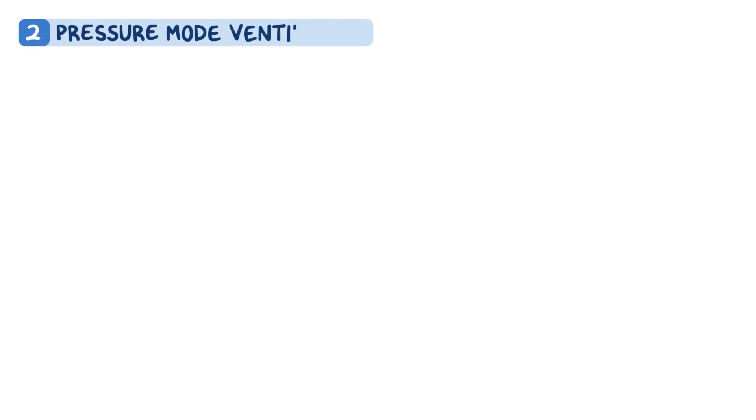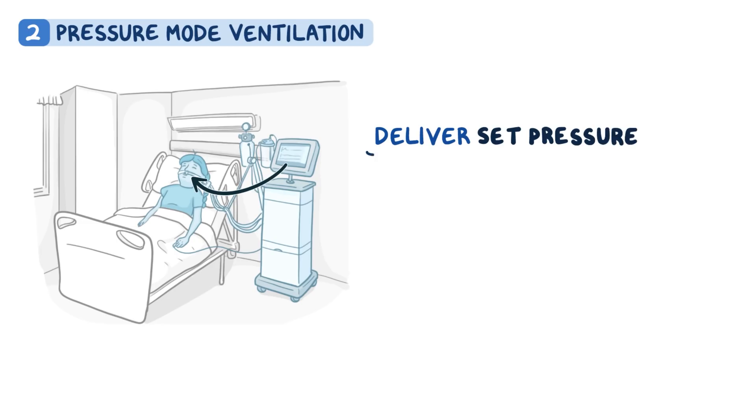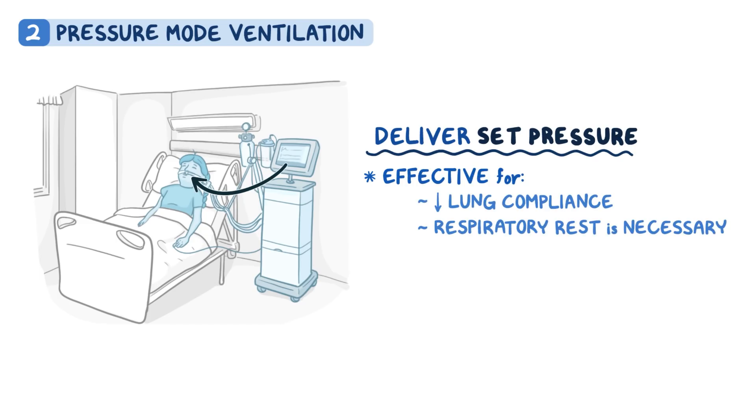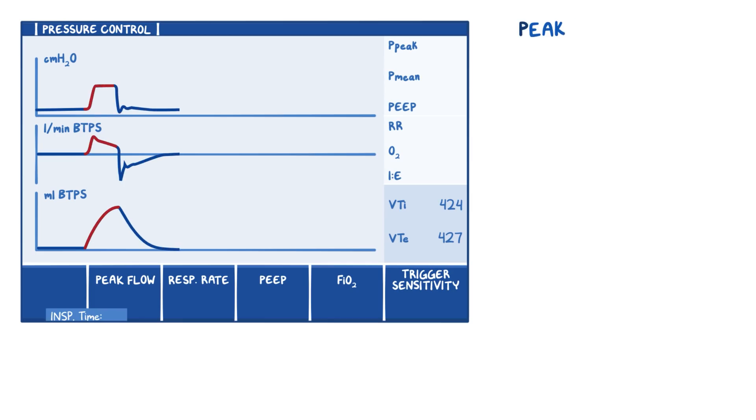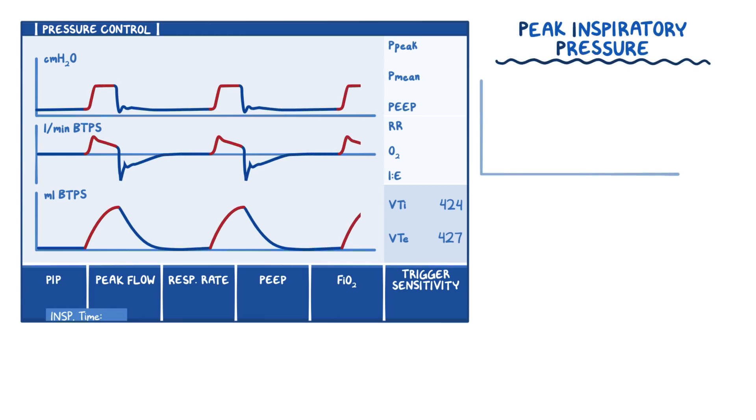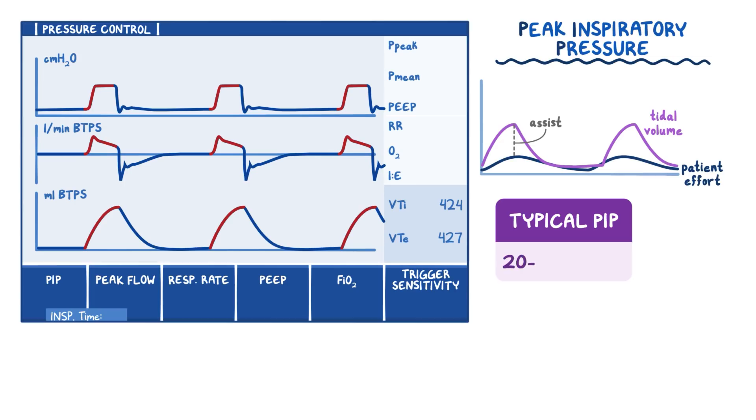Now, in pressure modes of ventilation, we need to program our ventilator to deliver a set pressure into our patient's lungs, rather than a set volume. Pressure ventilation is effective for patients with decreased lung compliance, or when respiratory rest is necessary. In pressure-assisted control ventilation, instead of a tidal volume, we'll set a peak inspiratory pressure, or PIP. This is the amount of pressure delivered in a coordinated manner to the patient. Every breath that the patient takes is fully assisted with a tidal volume created by the set pressure. A typical PIP in a person with healthy lungs is 20 to 25 centimeters of H2O. So let's program that in to our ventilator, remembering that our patient has sick lungs and that a PIP nearing 40 centimeters of H2O is a cause for concern.